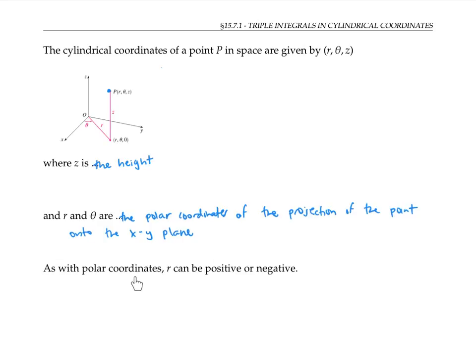As with polar coordinates, we allow r to be either positive or negative. And the negative r just means you rotate by 180 degrees around the z-axis from where the positive r would have taken you.